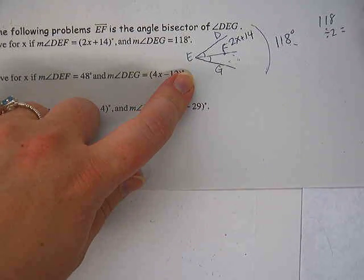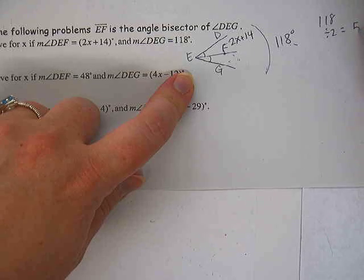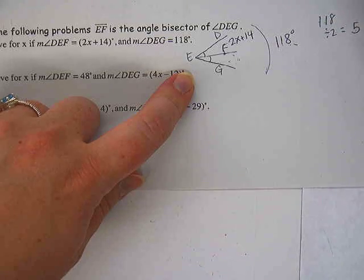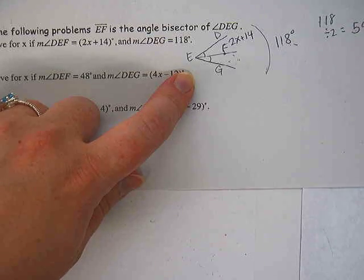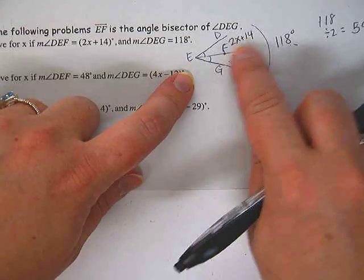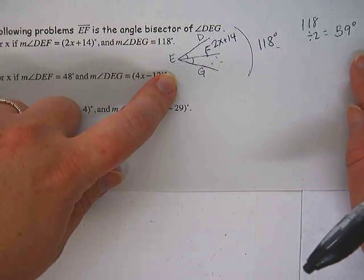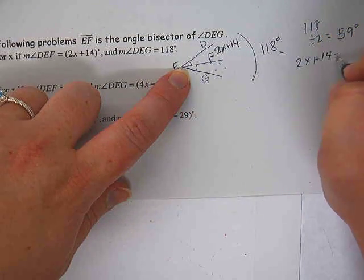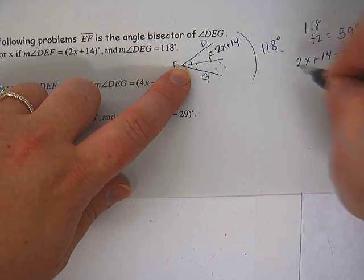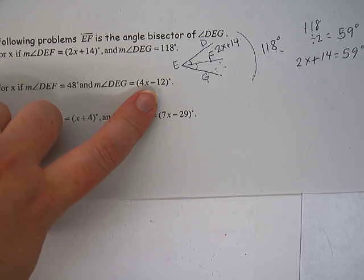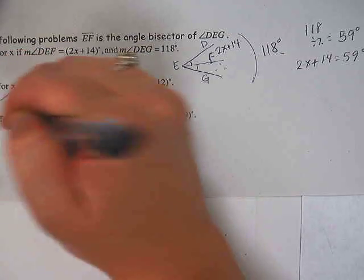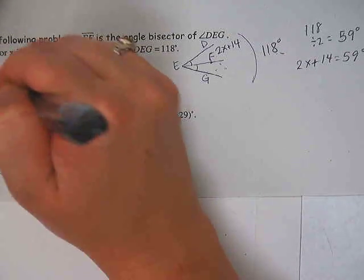Yeah, take the 118 and divide it by 2. What do you get? Half of 100 is 50. Half of 18 is 9. Okay, so half of the big angle would be 59 degrees. Does that mean that this thing, 2X plus 14 equals 59 degrees? Yeah. So now I have an algebra problem I can solve. 2X plus 14 equals 59 degrees, right? You guys go ahead and solve that for me. See if you can do that on your own.